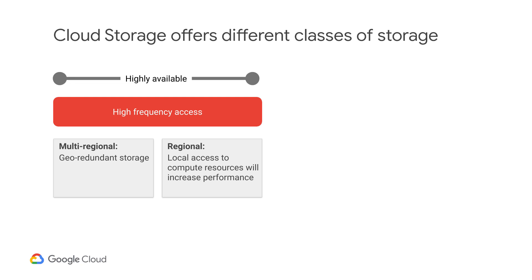Regional storage lets you store your data in a specific GCP region — for example, US-Central1, Europe-West1, or Asia-East1. It's cheaper than multi-regional storage, but it offers less redundancy. This option is ideal for data analytics and machine learning jobs.